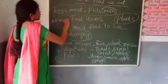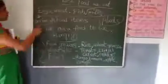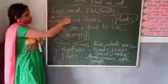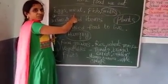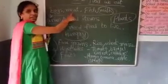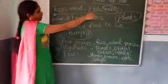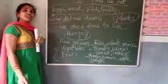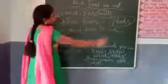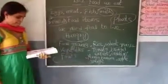From animals, we get eggs, meat, fish, milk. We get meat from hen and goat. We get fish from water. Cows and buffaloes give us milk. And we get food grains, vegetables, fruits from plants.